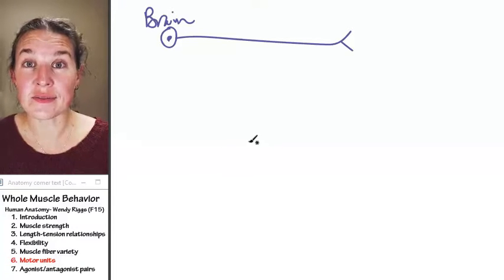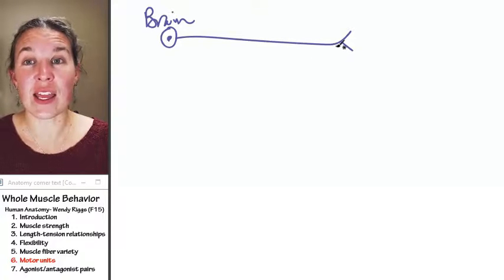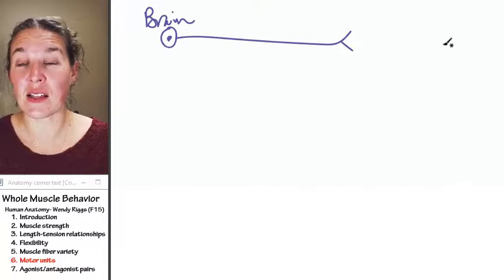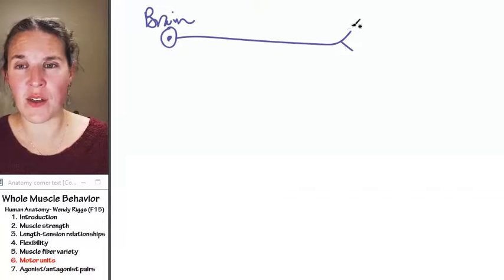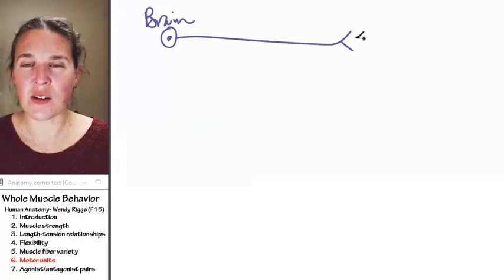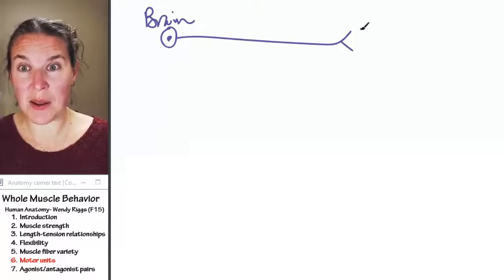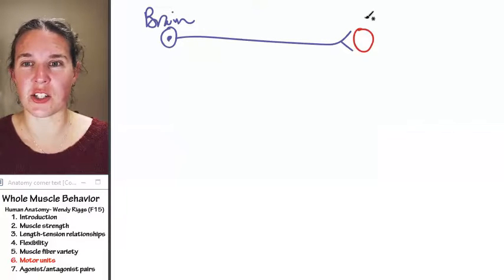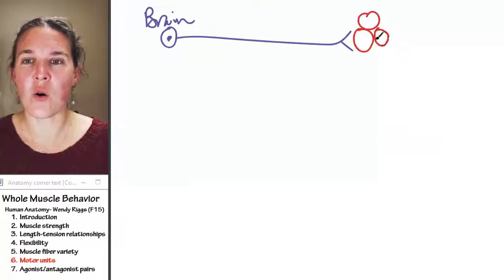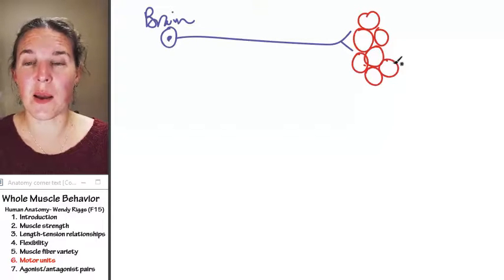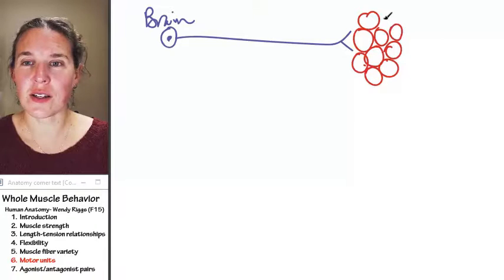And here's the scoop. One neuron can actually innervate more than one skeletal muscle fiber. Did you hear that? So one, okay, I don't know how I'm going to do this for you. I'm going to imagine I'm doing a cross section. So here are a whole bunch of myofibers. I'm making you a fascicle. Look at that fascicle.